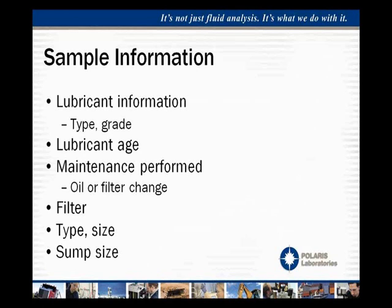We also look at the sump size of the component overall. The reason that matters is that you can have the same type of component — say a Caterpillar 3506 engine — if it's used in an industrial non-mobile setting it will have a larger sump size, as opposed to a mobile application which will have a smaller sump. When comparing a 10-gallon sump versus a 100-gallon sump, that same component generates only so much wear debris, so in a larger sump we'll look for a smaller count of elements in parts per million when flagging for an impending failure.